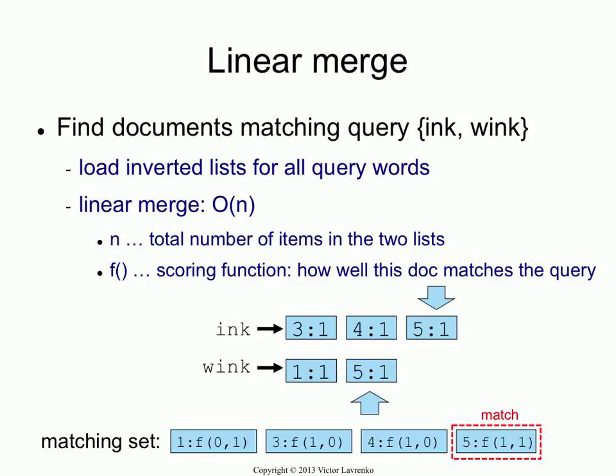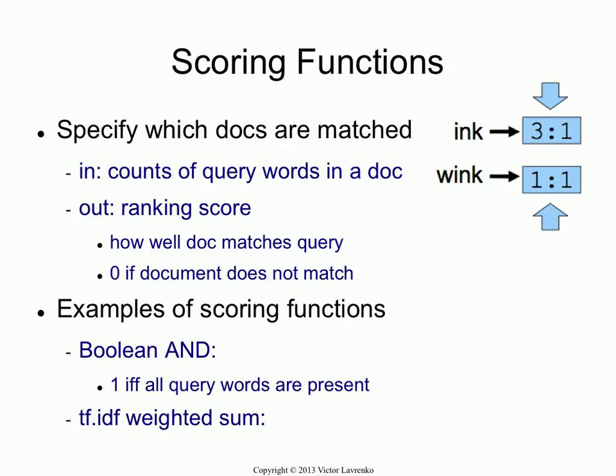It's a straightforward algorithm. Why do you do this as opposed to something simpler? Because this is the fastest way to do it. If you have two sorted lists, the fastest way to get an intersection is linear merge — it's linear in the size of the lists, and you cannot do any faster than that. Now, what are these scoring functions? Scoring functions basically tell you whether the document matches the query, or in the case of other scoring functions, how well the document matches the query.